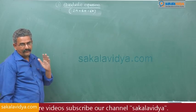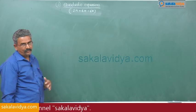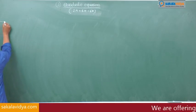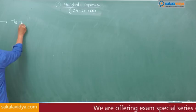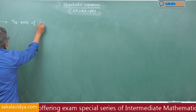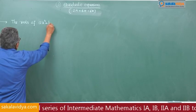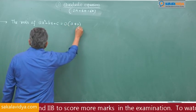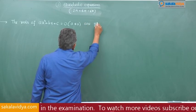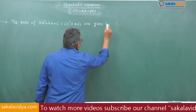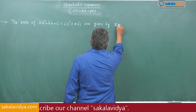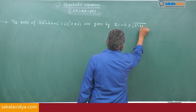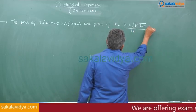First let us discuss very briefly the concepts of quadratic expressions and the formulas which we apply for the upcoming problems in this module. The roots of ax² + bx + c = 0, where a ≠ 0, are given by x = (−b ± √(b² − 4ac)) / 2a. This is known as the quadratic formula.